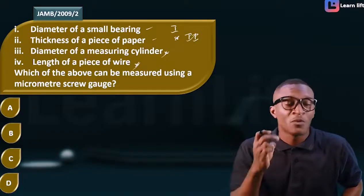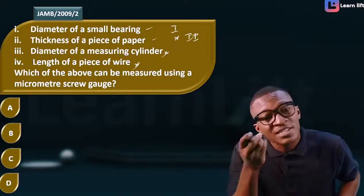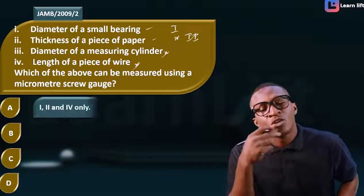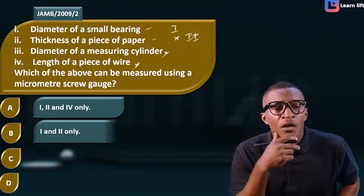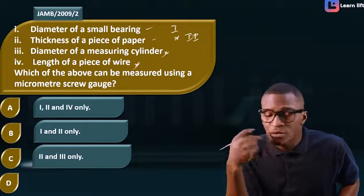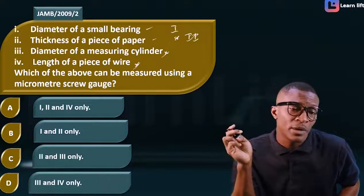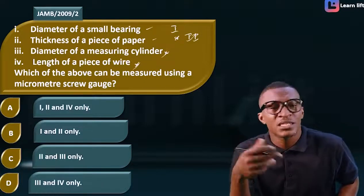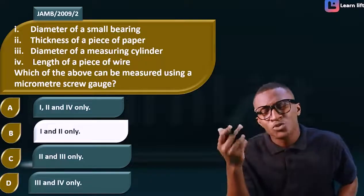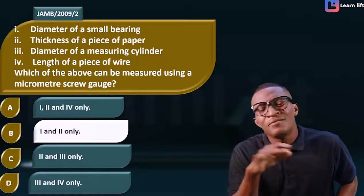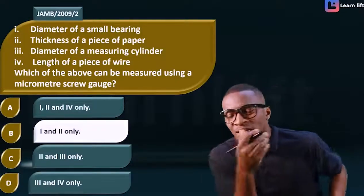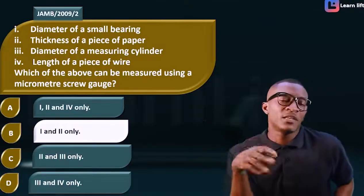So the micrometer screw gauge measures the small bearing ball thickness and thickness of a piece of paper. The options were: A — one, two and four; B — one and two; C — two and three; D — three and four. The answer is one and two, which is option B.